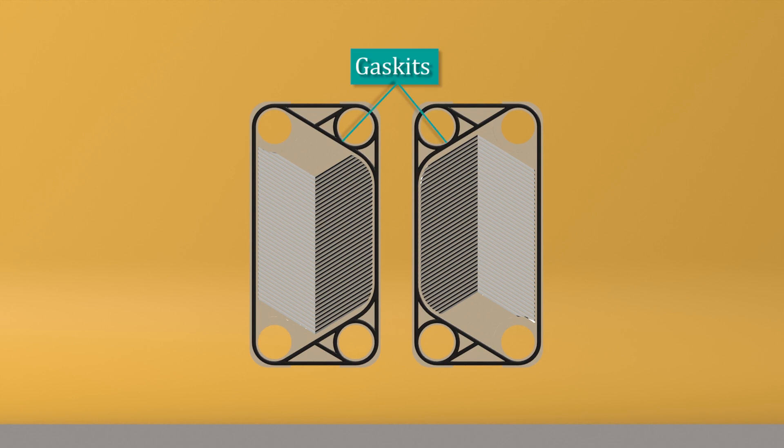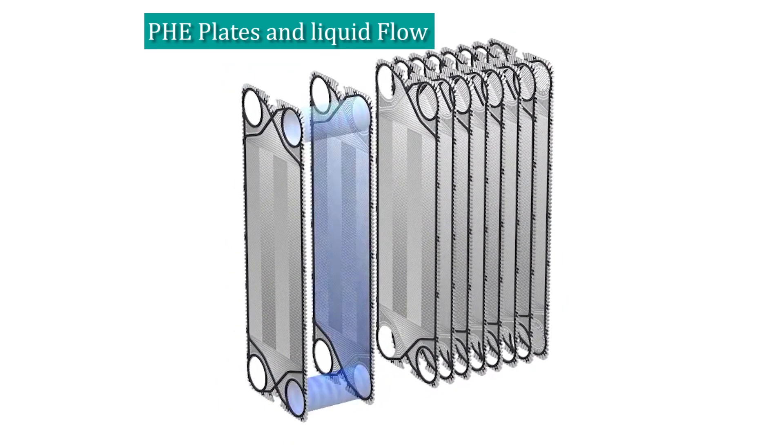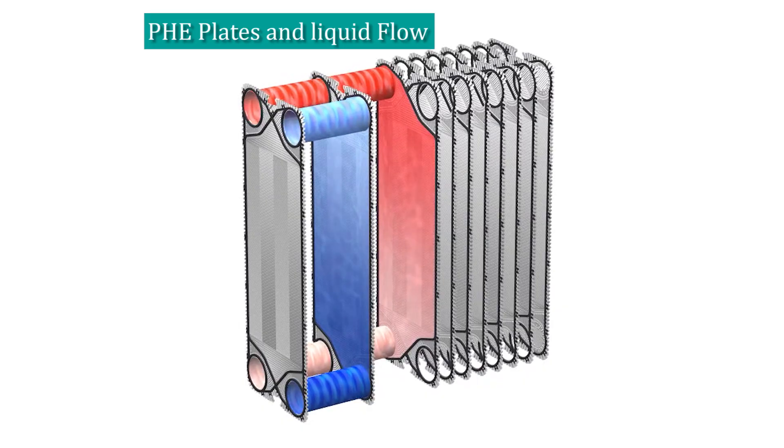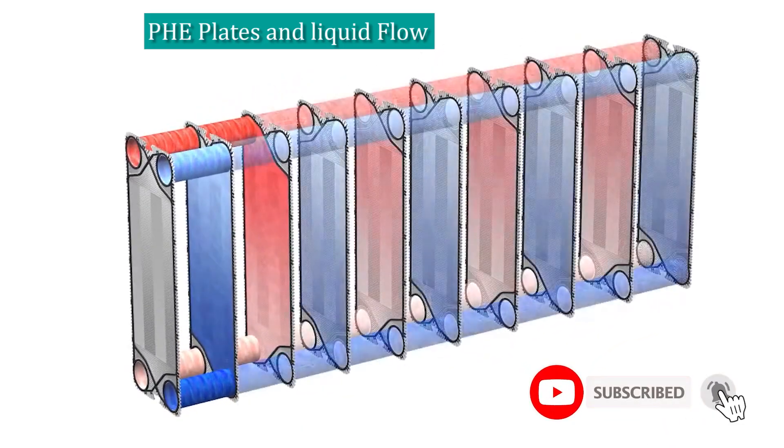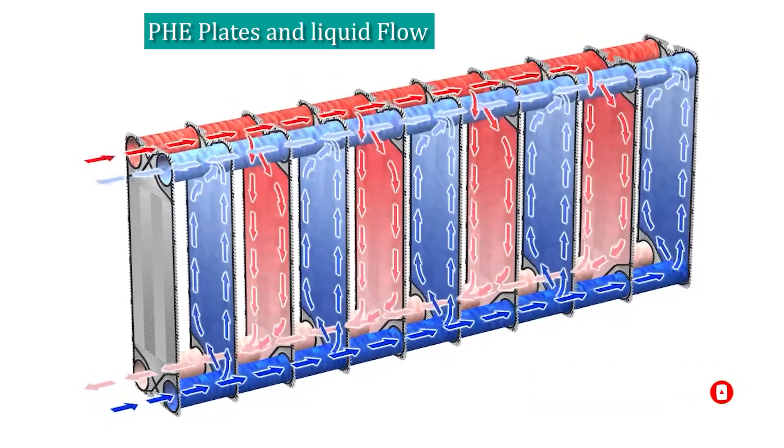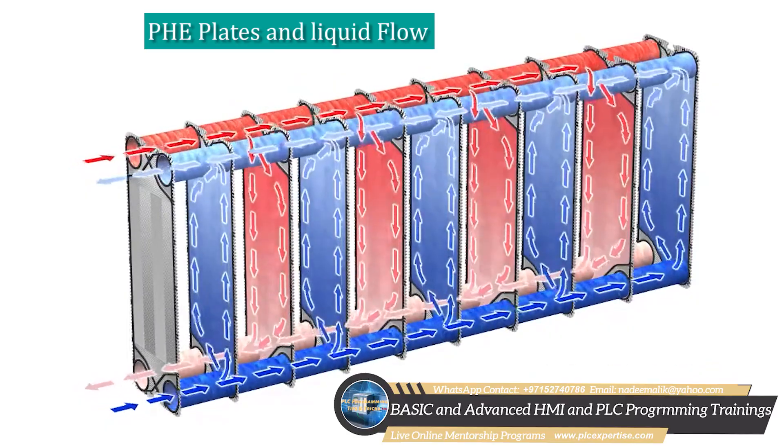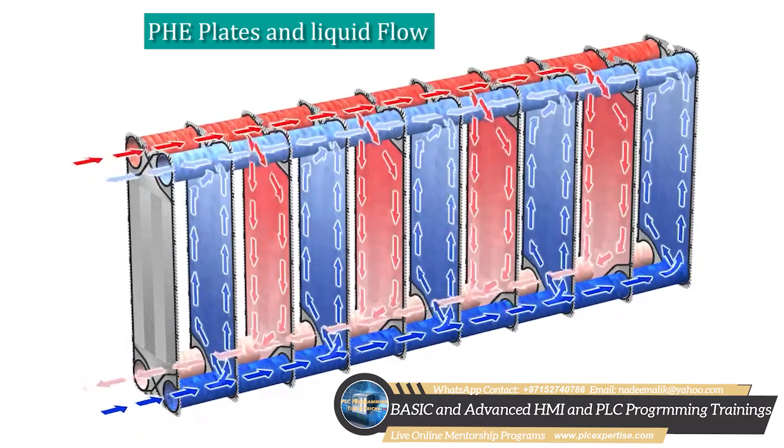Between these plates you will find gaskets. The gaskets are shaped in such a way that they guide the fluid into alternate channels: one channel for the hot fluid and the next channel for the cold fluid, and so on. This gasket sealing is very important. It keeps the two liquids completely separate so they never mix. Only the heat is exchanged.